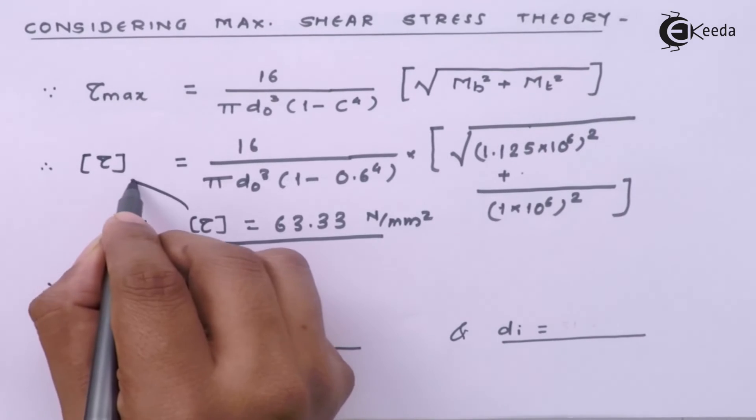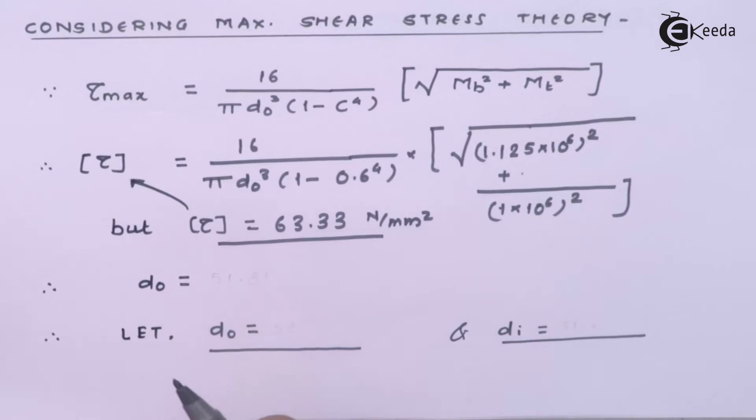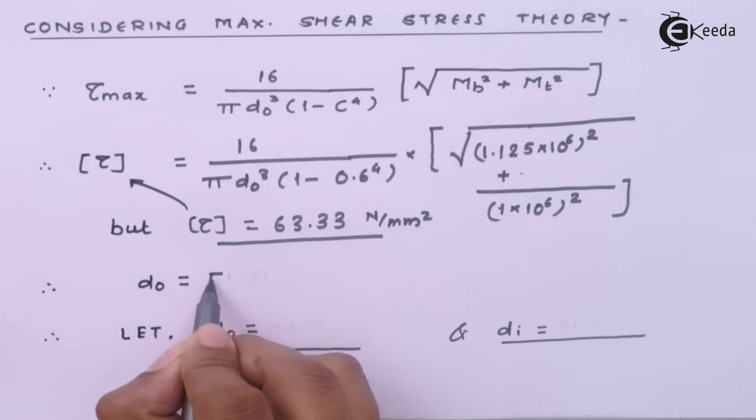If I substitute this value back in this equation we will get the value of diameter D0 which is the only unknown in our case.